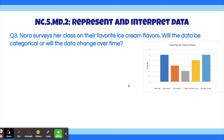Question 4. Nora surveys her class on their favorite ice cream flavors. Will the data be categorical, or will the data change over time? Here is the graph that Nora surveyed her class on.